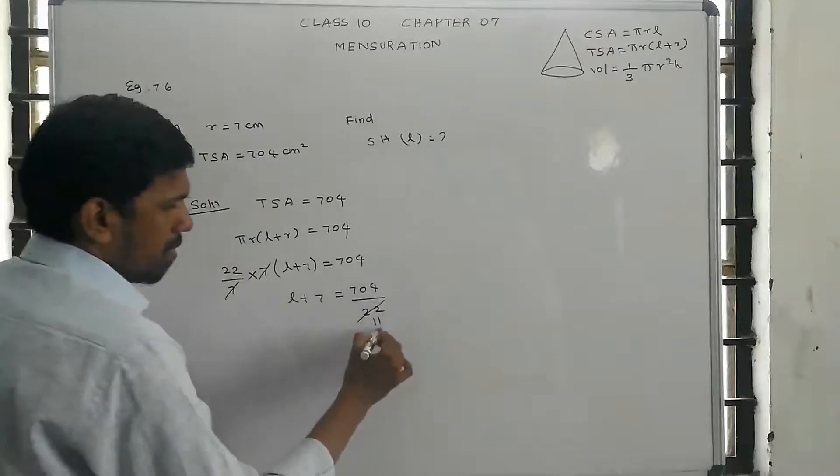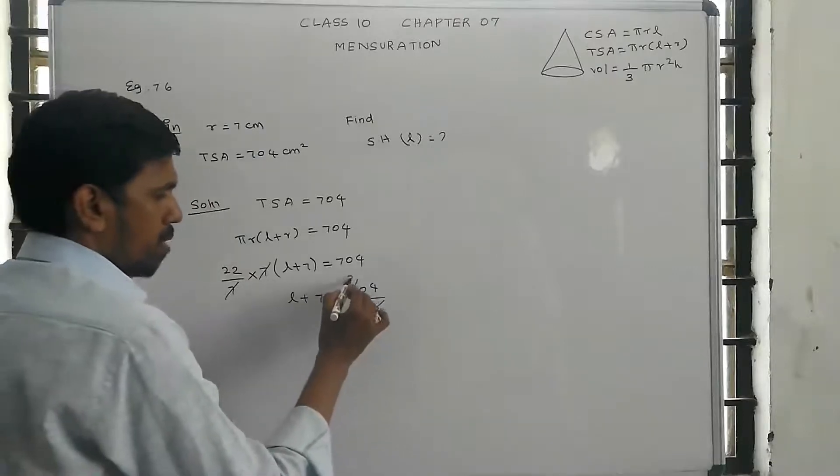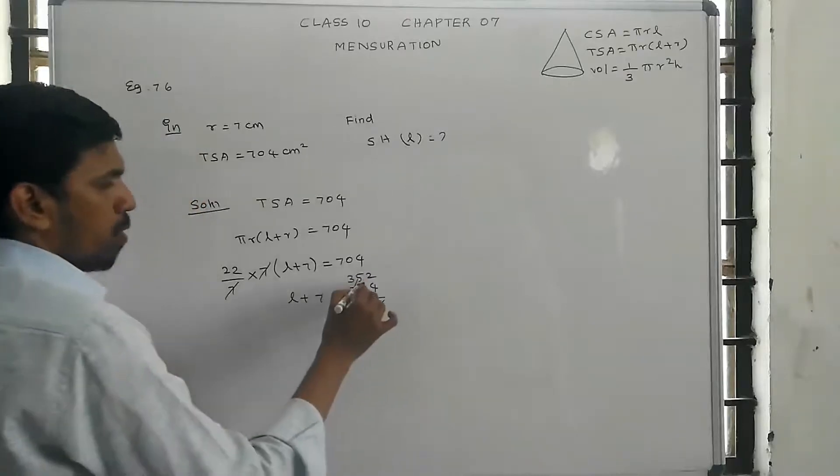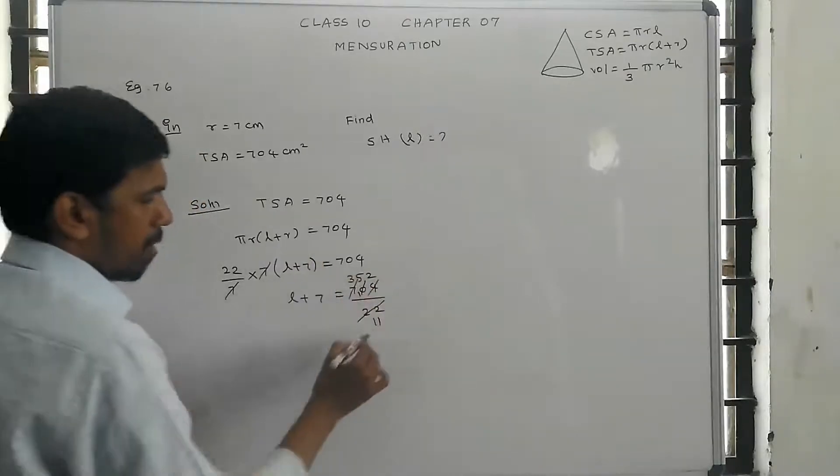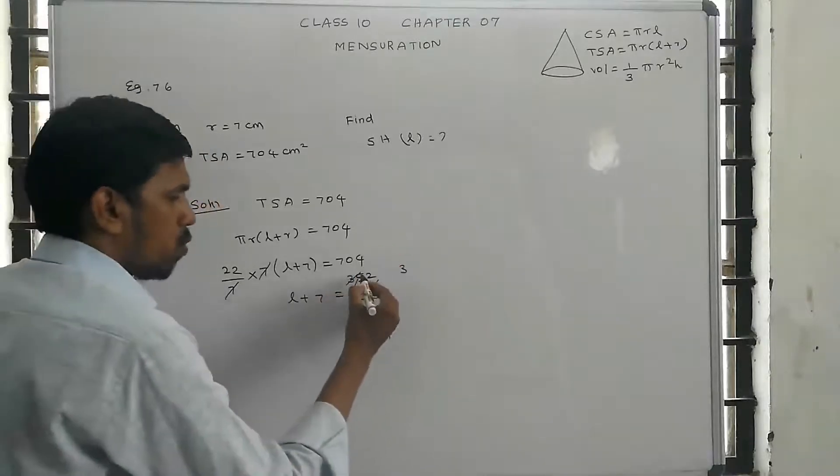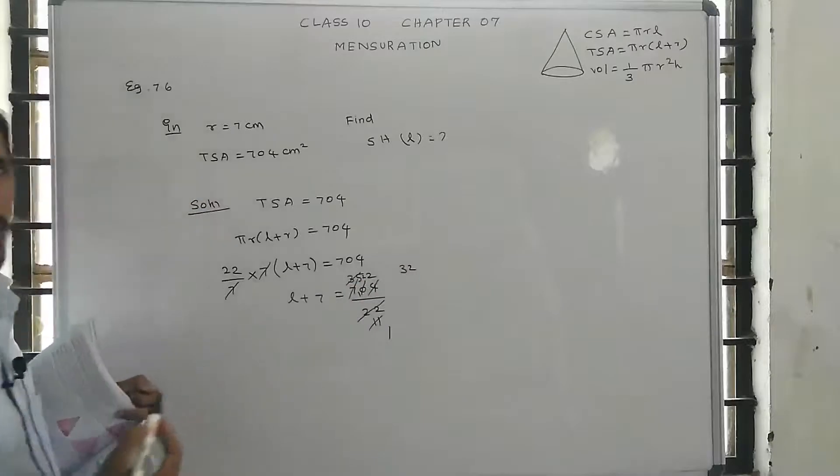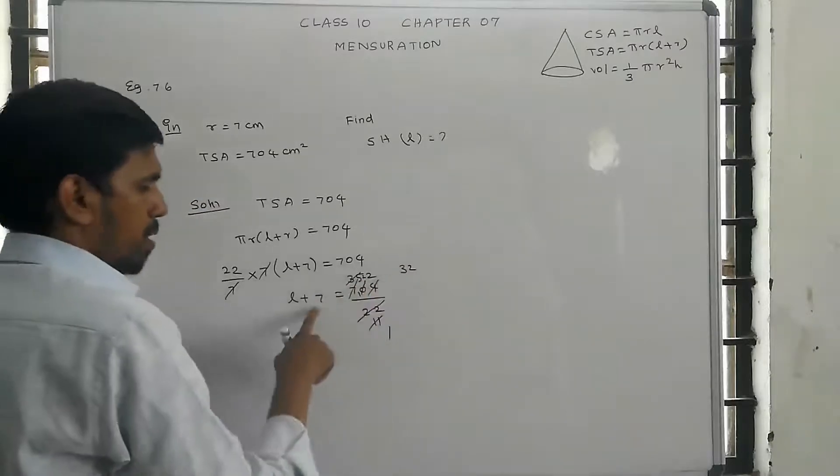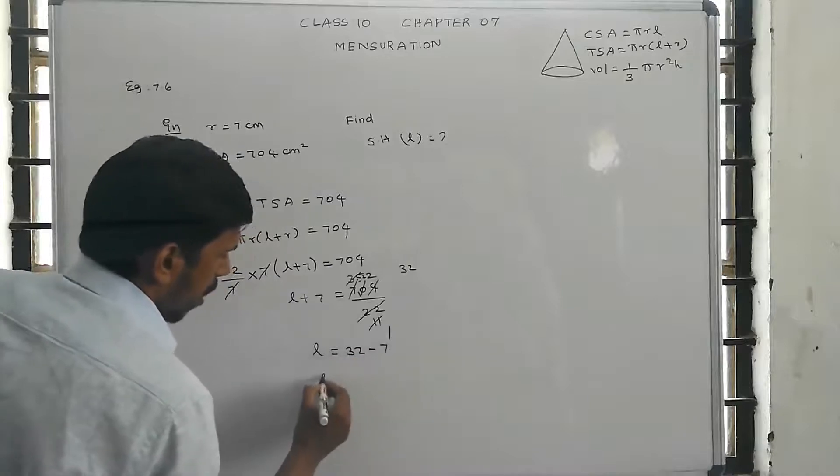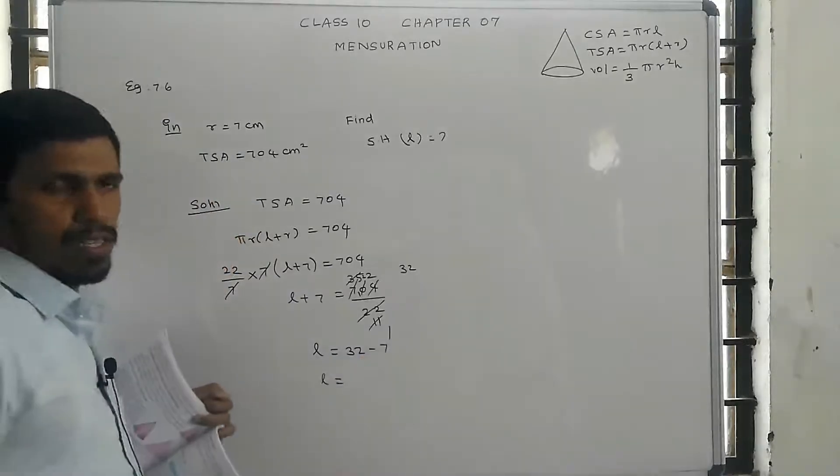Two divides and cancels, so 11 times 2 is cancelled. The answer is 32 times. So (l plus 7) equals 32. L equals 32 minus 7, so l equals 25.